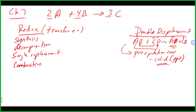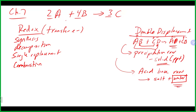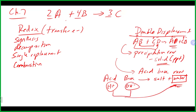That formation of a solid is the second reason why a reaction takes place. The other common type of double displacement is an acid-base reaction. In an acid-base neutralization reaction, you make a salt — an ionic compound — and water. The acid donates H⁺ and the base donates OH⁻; they combine to make water. That's why a reaction of a strong acid and strong base is called a neutralization reaction.